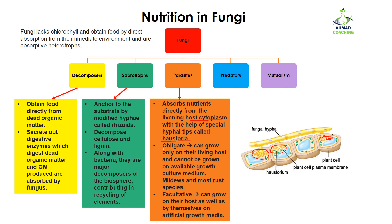There are two types of parasites: obligate and facultative. Obligate parasites can grow only on their living host and cannot grow on an artificial culture medium. For example, you cannot grow them on laboratory plates because they can only live on their living host. Mildews and most rust species are obligate parasites.